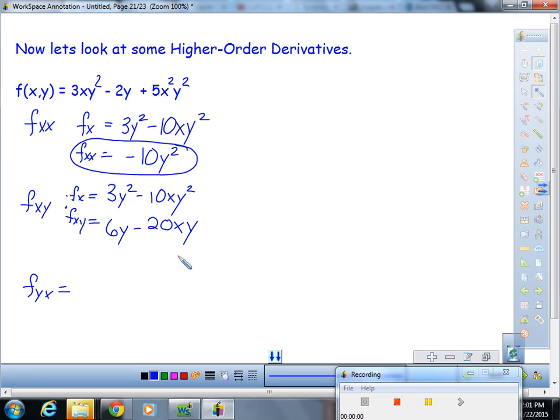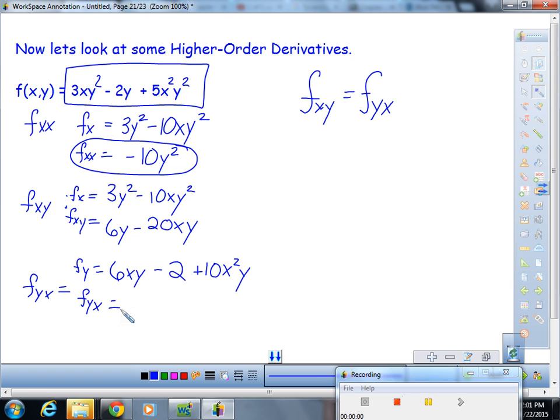It's commutative. So I'll show you that right now. To find f sub yx, we're going to start with f sub y of this. So I need to differentiate back up to the top with respect to y. That's going to be 6xy minus 2 plus 10x²y. Now let's take that and differentiate it with respect to x. 6y, the constant is gone, minus 20xy. Check it out.